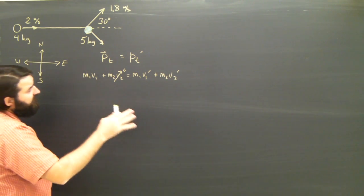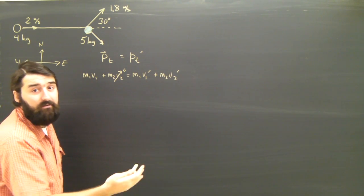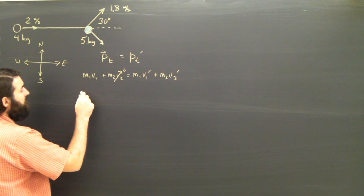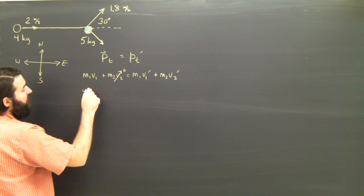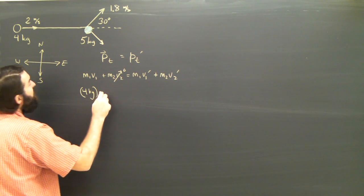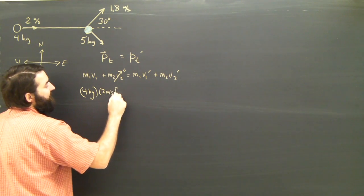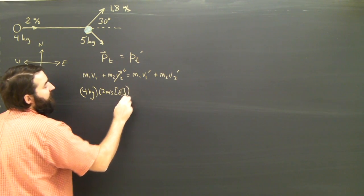And now, if I dump in some of my givens, I can come up with an equation in bearing form. So M1 is 4 kilograms times V1, which is 2 meters per second east now,